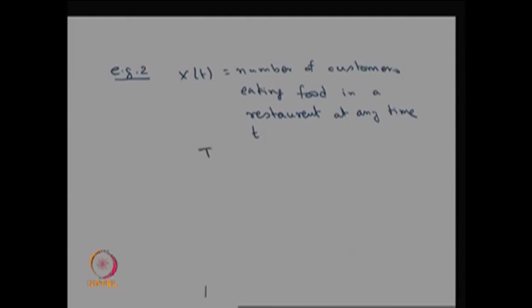Therefore, the possible values of the parameter space T are t ≥ 0, and the possible values of the state space S are still a count. Therefore, the possible values are countably finite or countably infinite. This collection of random variables over T is going to be a continuous time, discrete state stochastic process.